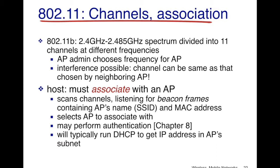When a host enters a Wi-Fi environment, it may receive beacon frames from multiple access points. It must then choose which access point to associate with. The access point may require authentication, which we'll discuss in later videos. Once authenticated, the access point typically runs DHCP to assign an IP address to the host, and then the host is connected to the access point's subnet and can send packets to the greater internet.